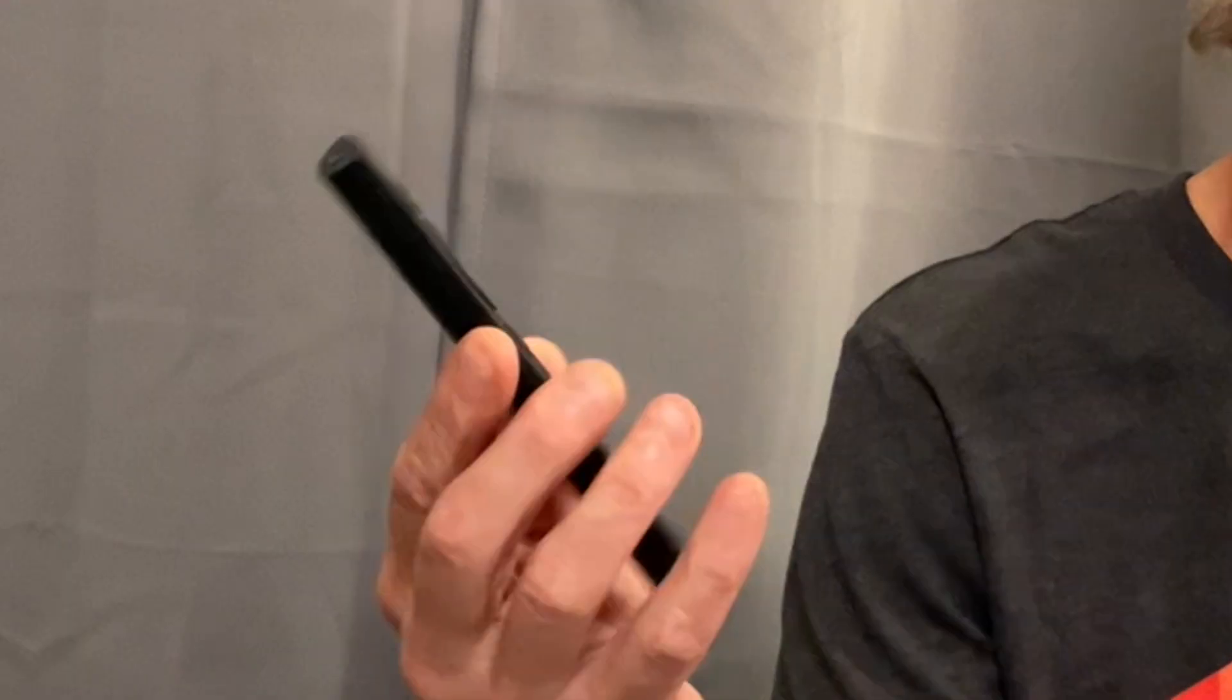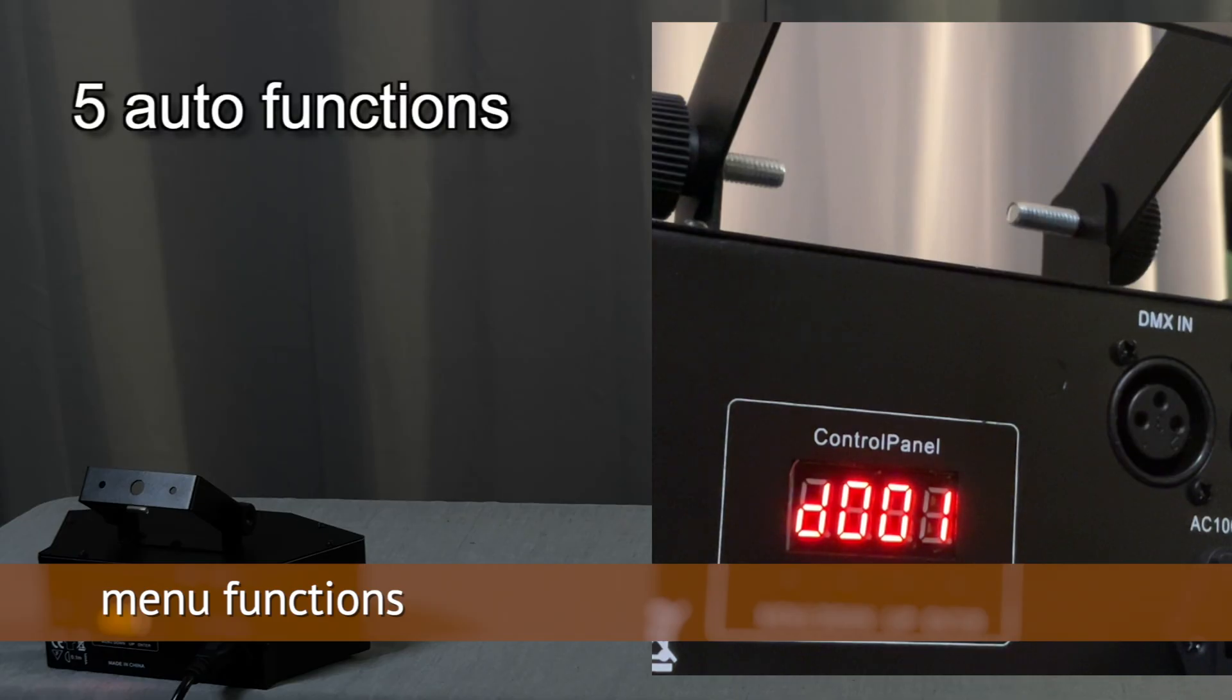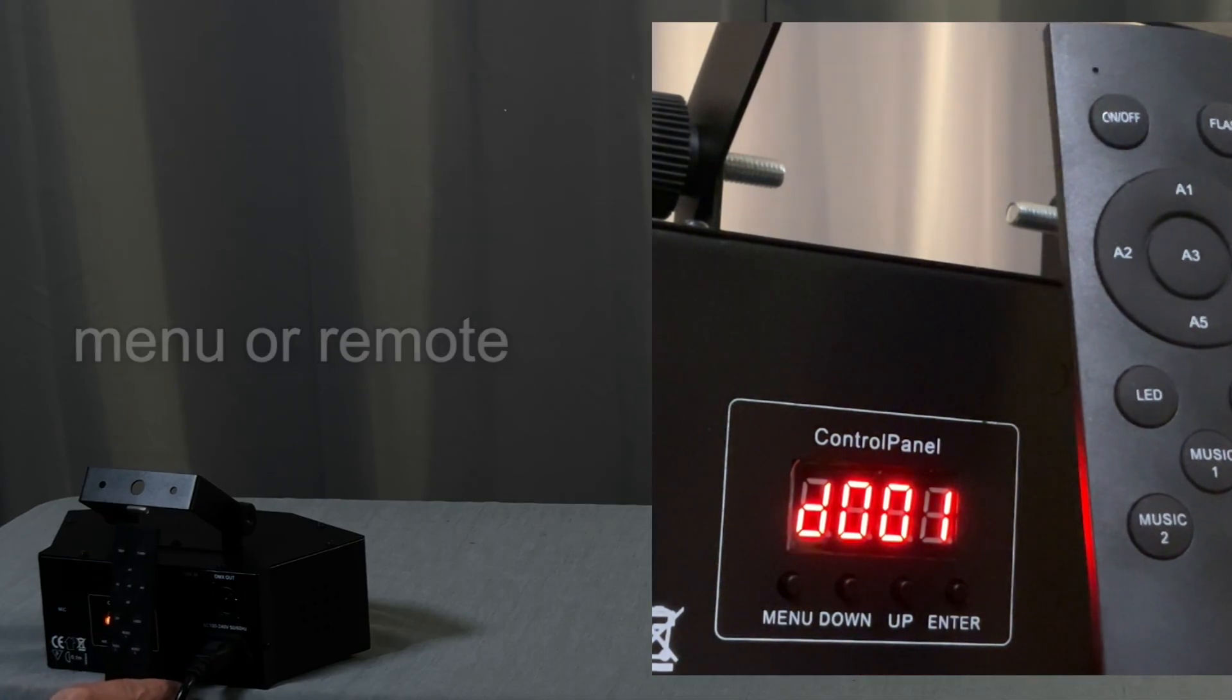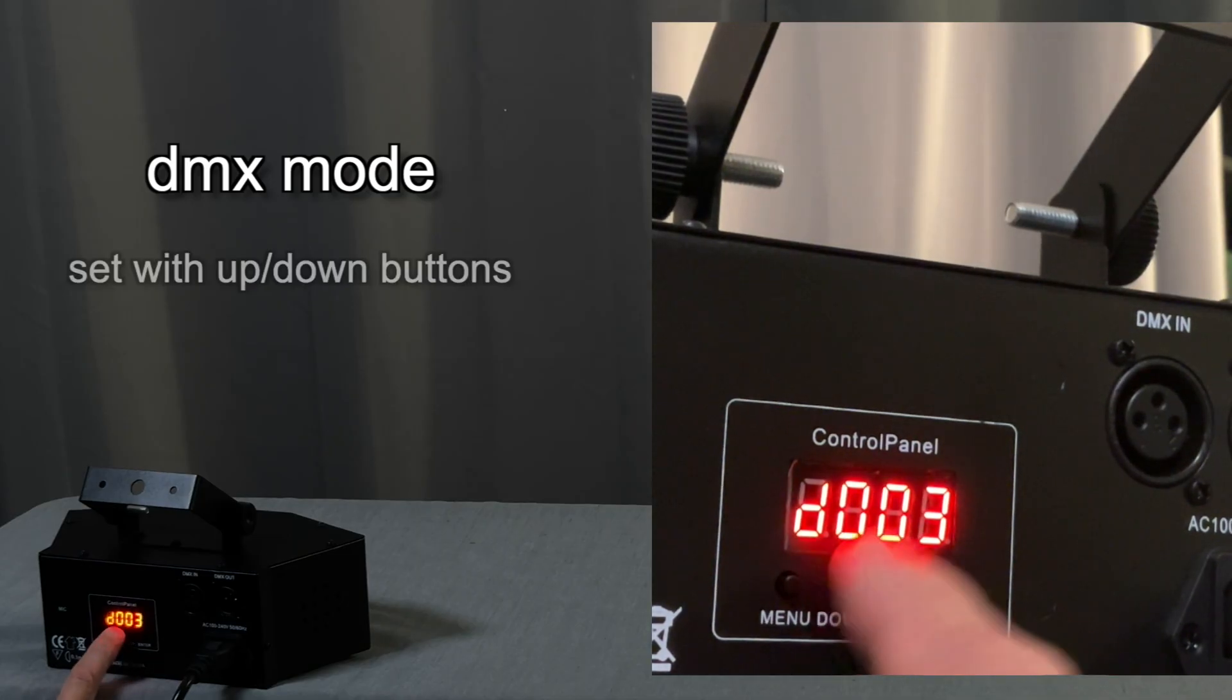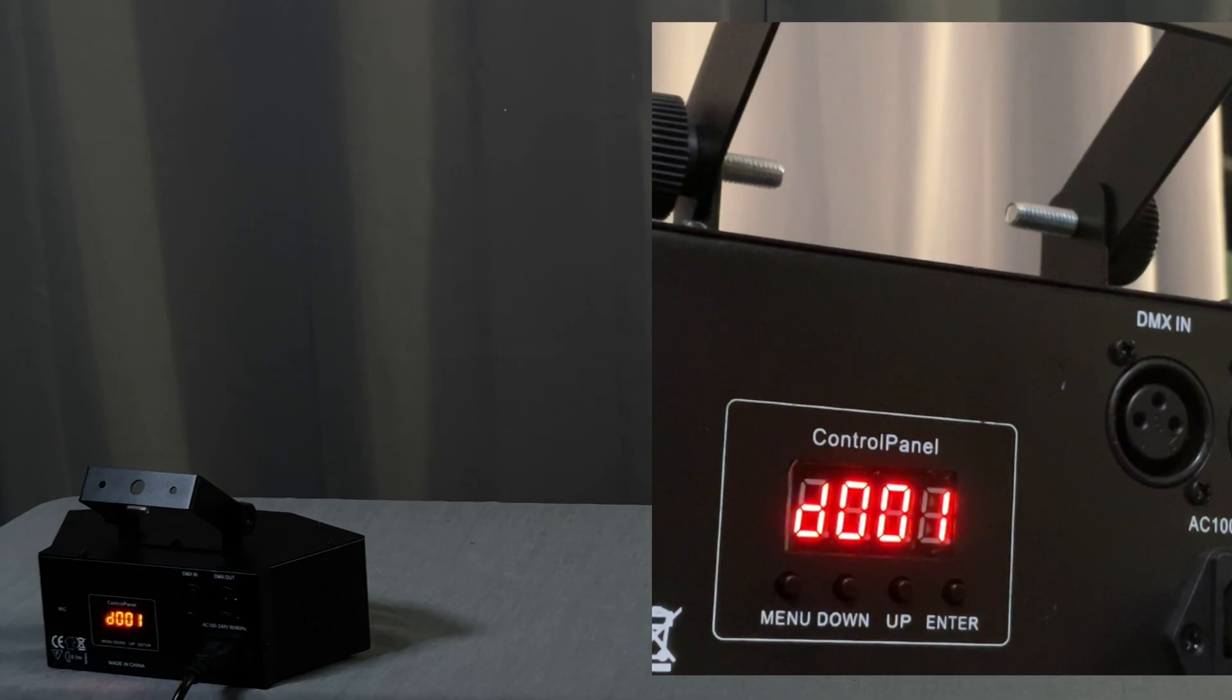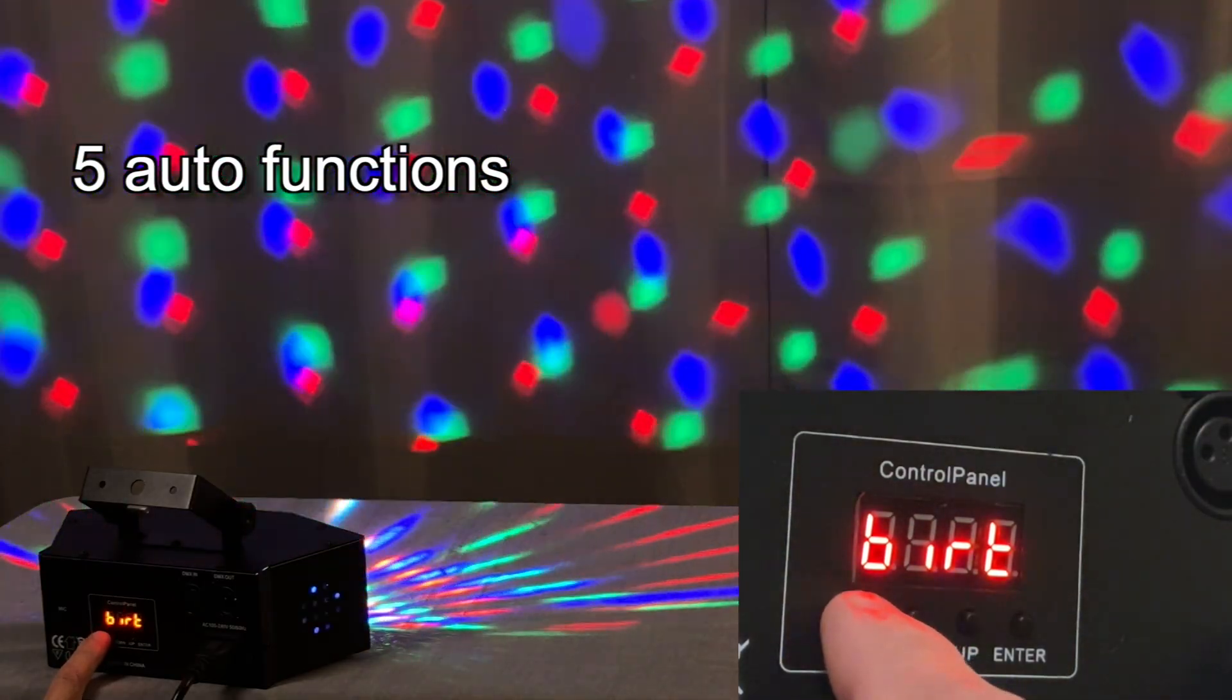But once it's powered up it really works very reliably with really good feeling buttons. This light basically has five different auto functions and three different sound active functions. And you can access them from the menu controls or from the remote control. When it powers up it's in DMX mode showing a DMX starting address of one. But you can change that with the up and down buttons. Down makes it go up and up makes it go down. It's kind of interesting. Hit enter to set the DMX starting address.